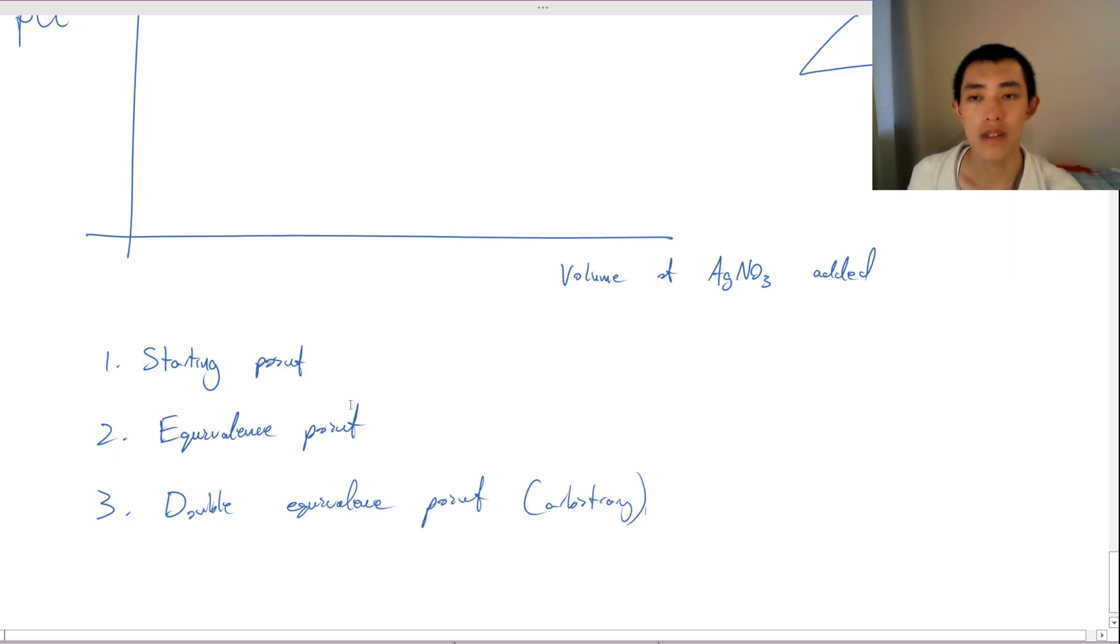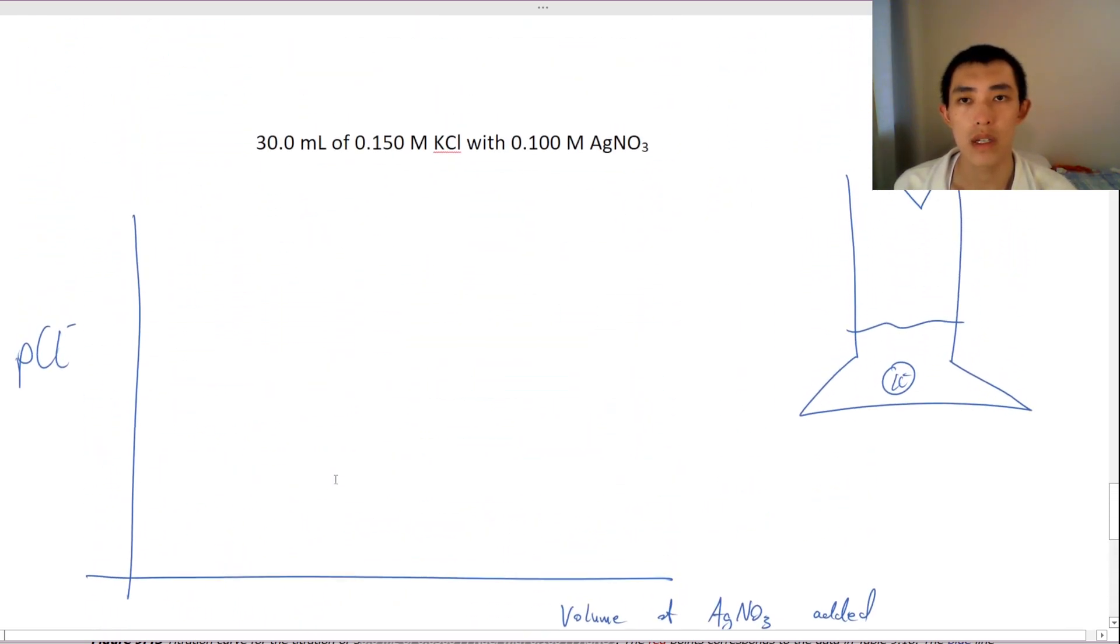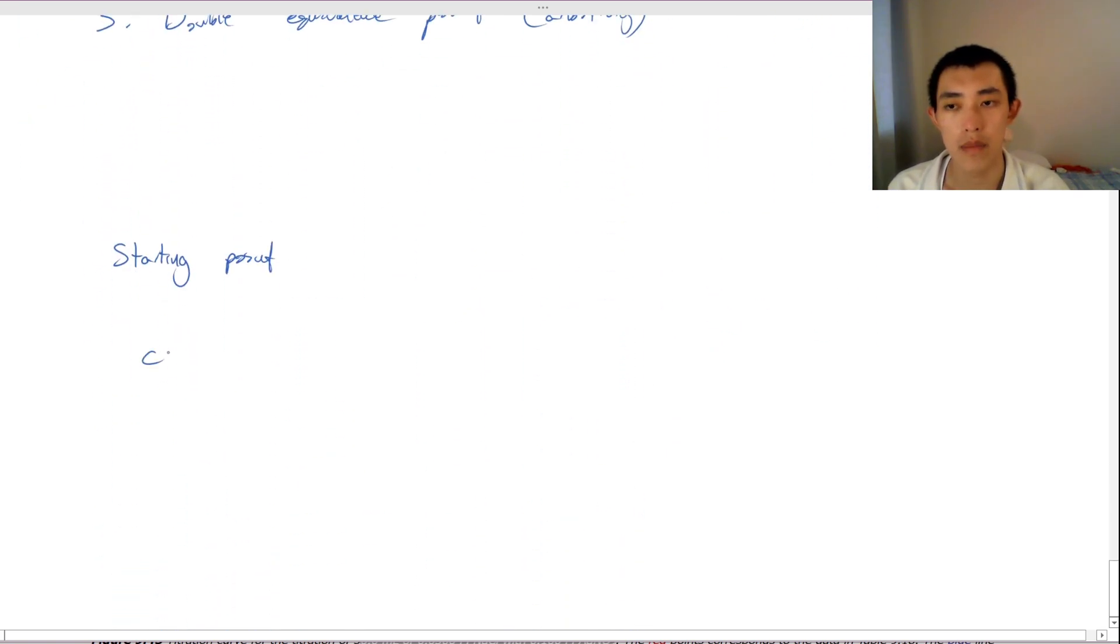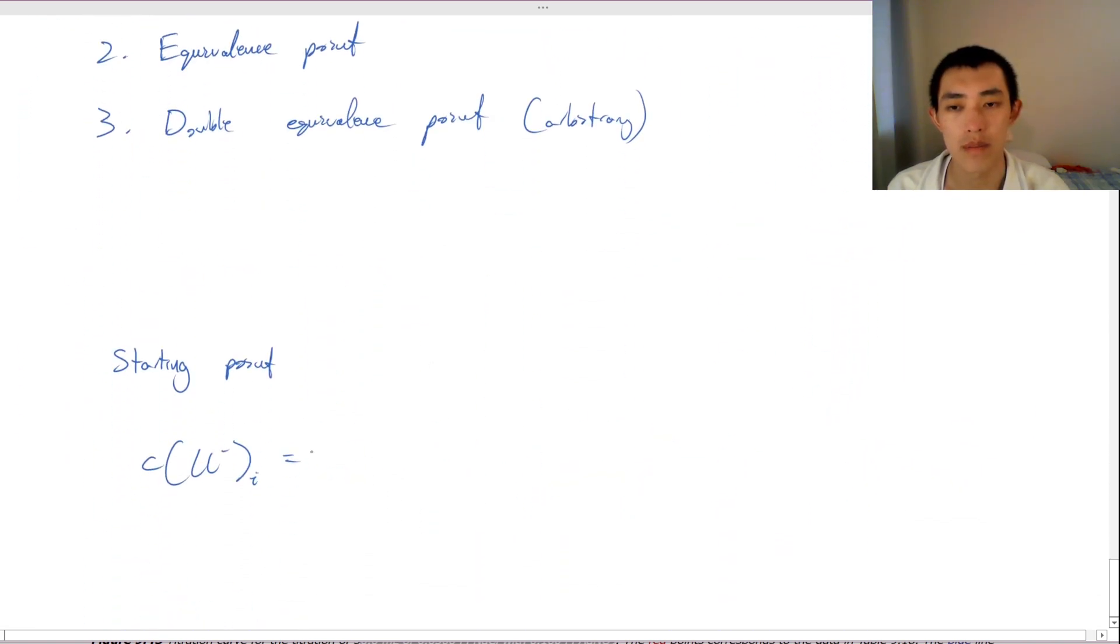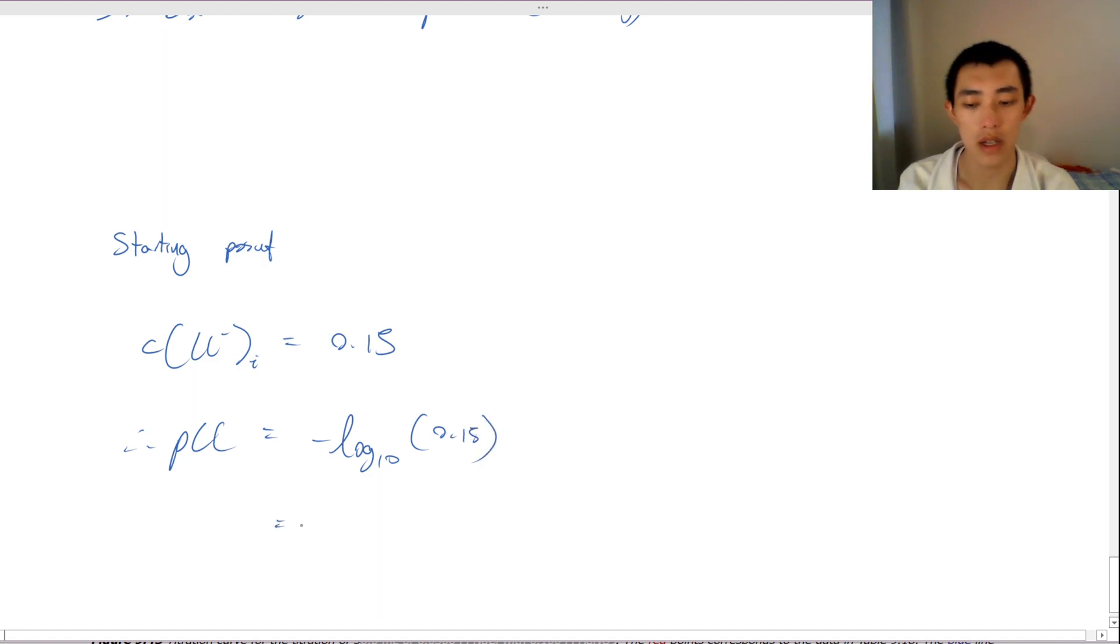So let's have a go at some of these, starting off with the starting point. So how do we figure out the starting point pCl? So what we want to do is we want to figure out what the initial concentration of chlorine is initially. And thankfully, this is actually pretty easy because it's basically just given to us at 0.15 molar. So we put this into the log function. So therefore, pCl is going to equal to negative log base 10 of 0.15, which will give us 0.82.